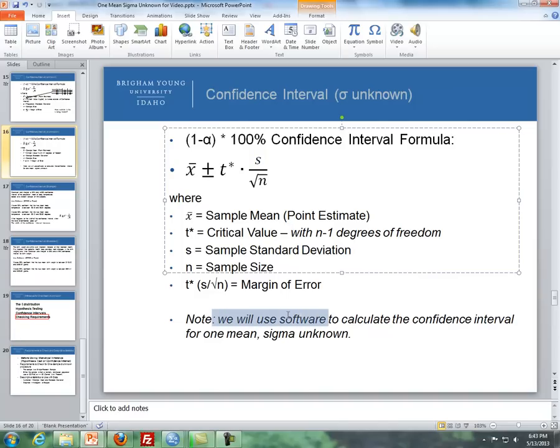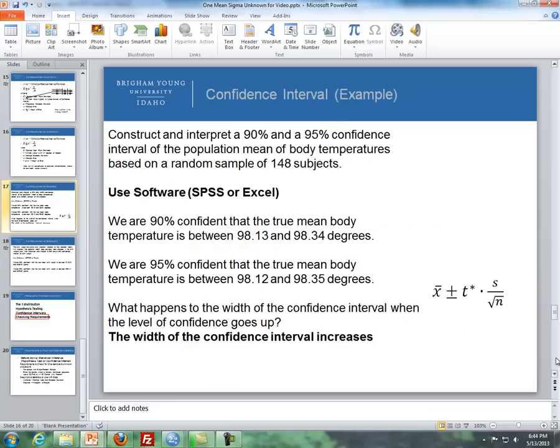But we'll be using software to calculate the confidence interval for a one-means sigma unknown. So this will be factored in when we use either SPSS or Excel, and this will be as well the s, our sample standard deviation. And like the last one, our margin of error is everything to the right of the plus or minus sign. So every confidence interval you'll see throughout this course, there's a point estimate, in this case it's x-bar, plus or minus a margin of error. You'll always find that with a confidence interval.